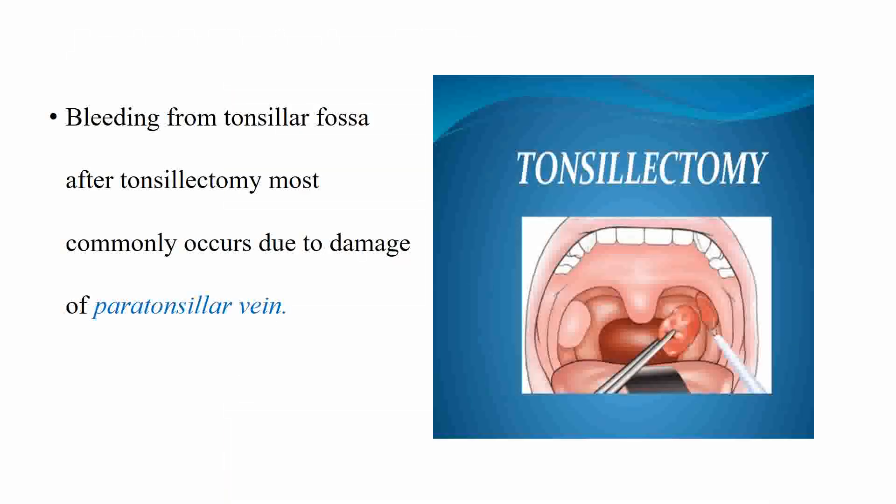Next is the surgical management of tonsillitis, which is tonsillectomy — the removal of the tonsil. After tonsillectomy, most commonly there will be hemorrhage. Bleeding from the tonsillar fossa after tonsillectomy is most commonly due to damage of the paratonsillar vein, which is present between the capsule and the tonsillar bed structure. Therefore, hemorrhage from the tonsillar fossa after tonsillectomy is very common.